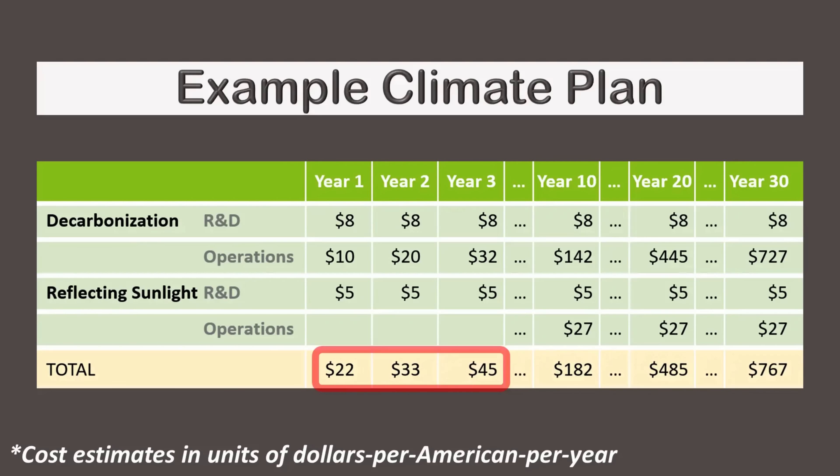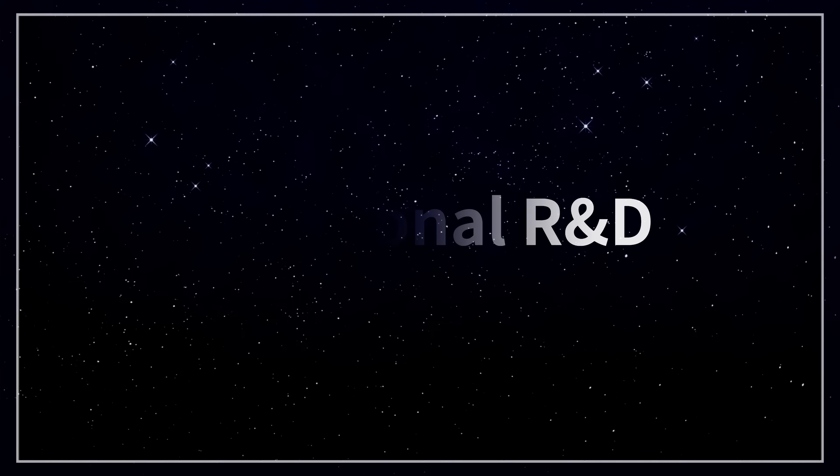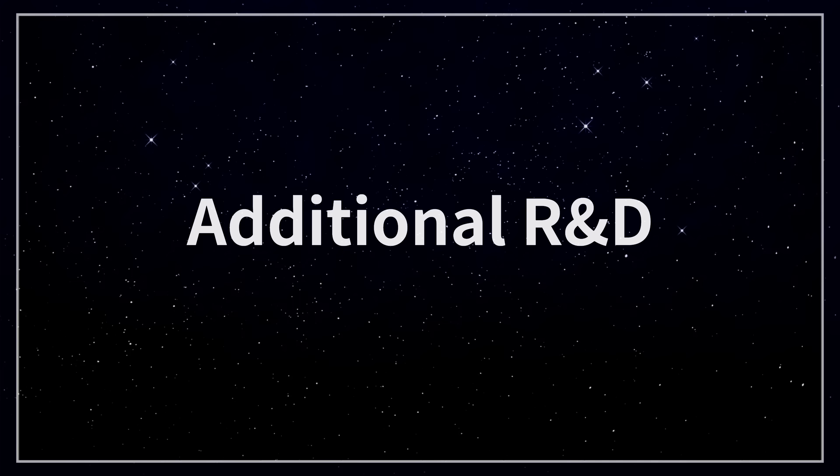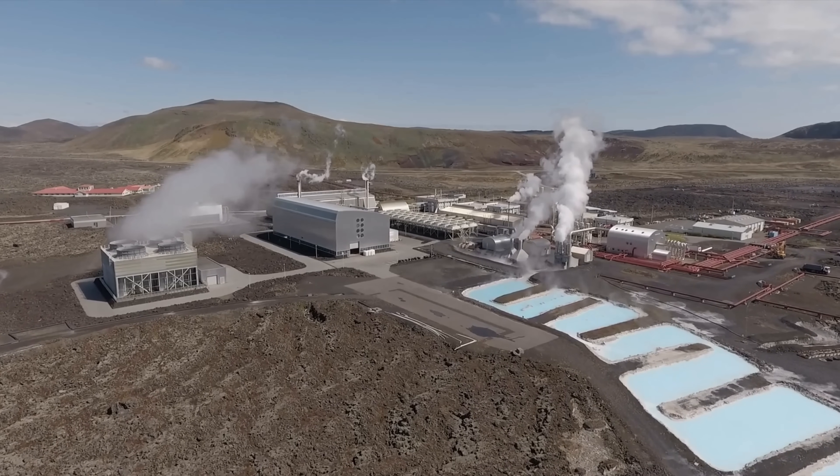If decarbonization is done in lowest-cost order, the early years would be relatively easy, and with additional R&D, in theory the later years could be easy too. Additional R&D can be broken down into multiple categories, where each is referred to as an R&D package. For example, one R&D package might focus on nuclear fission, while another focuses on geothermal.